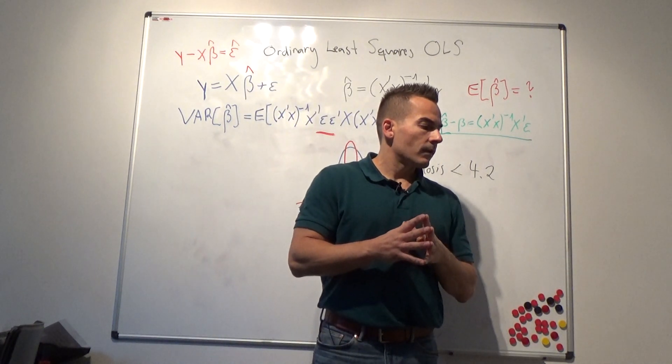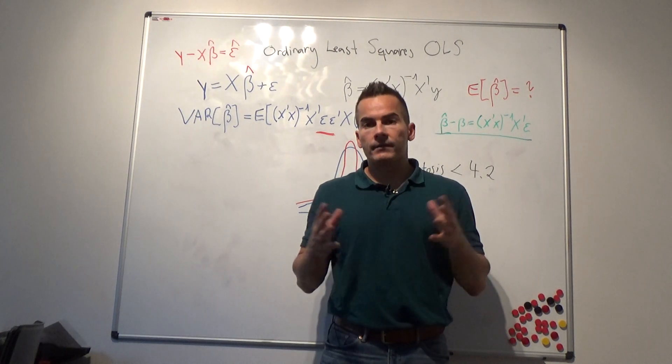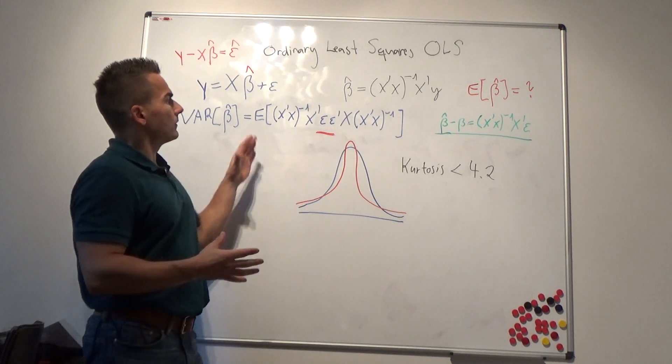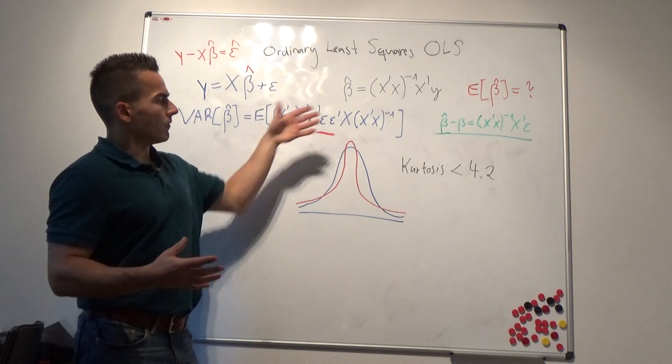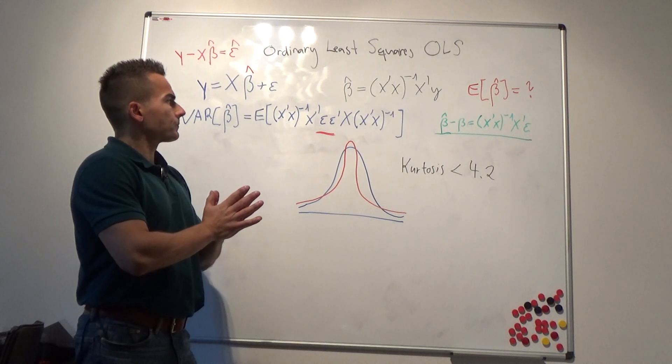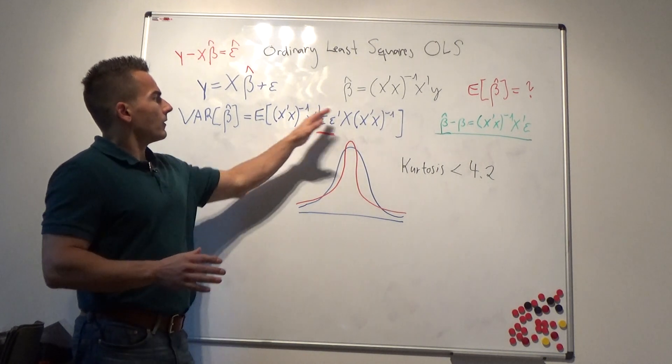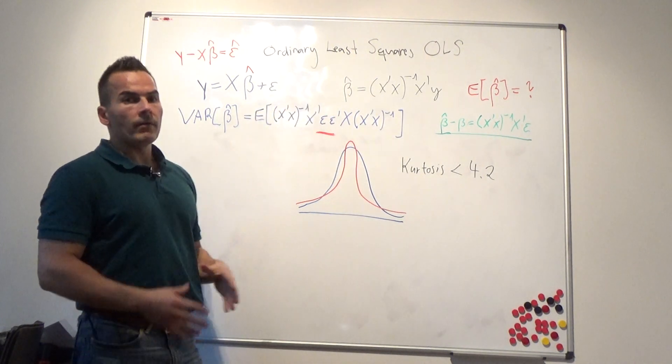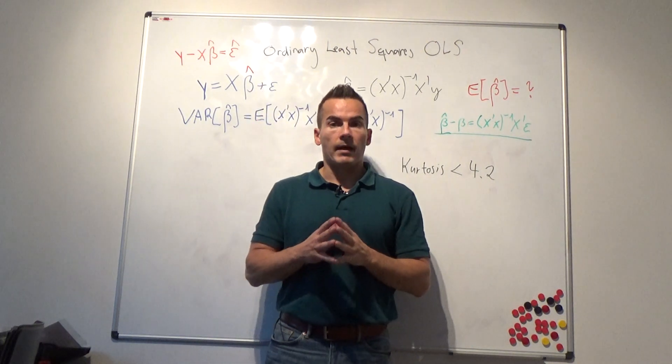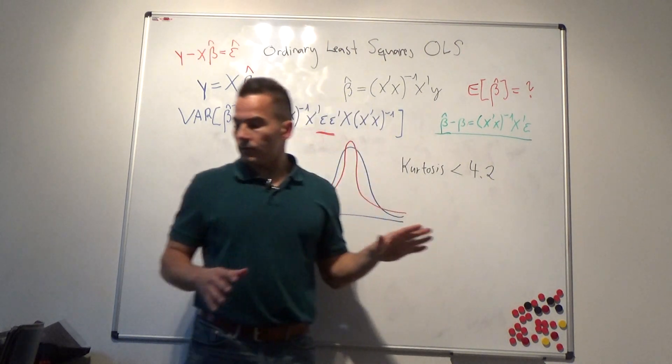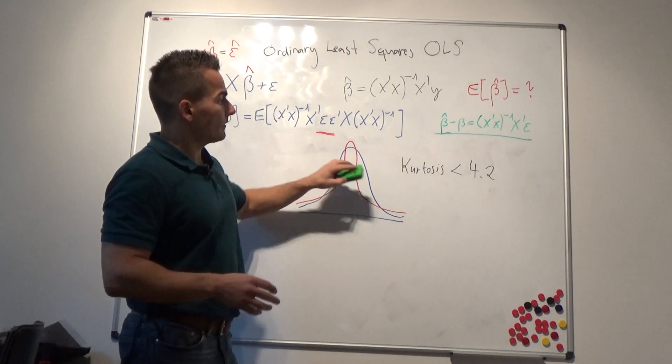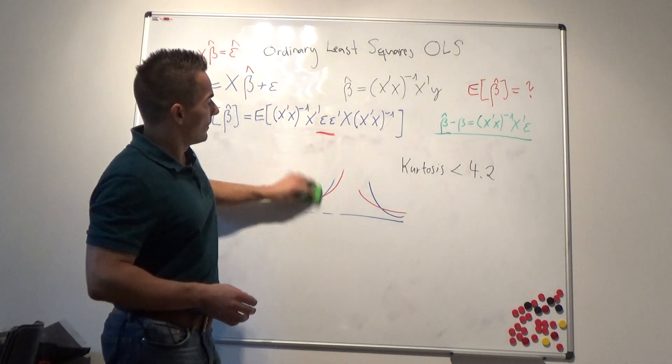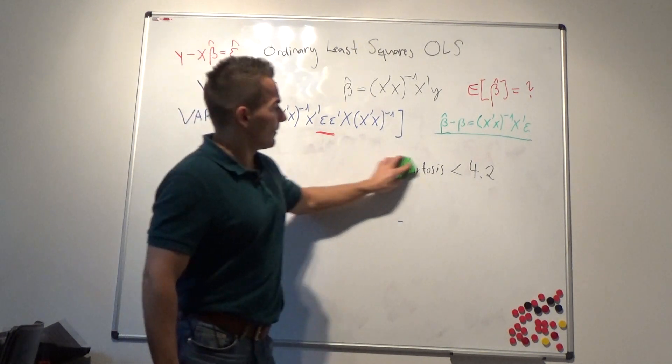And what we will do next is we will have a look at how we can adjust the covariance matrix of our beta parameter if there's a certain dependency structure in the variance, which we often see in financial markets. But in what follows, we assume at least that the kurtosis is less than 4.2, so we assume that the variance exists.